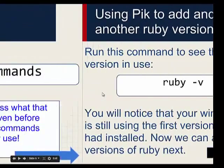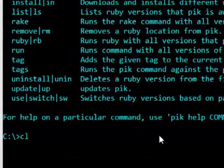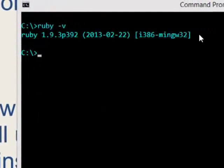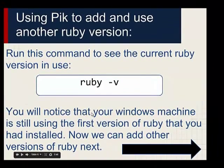Another feature is using pik to add and use another Ruby version. The main purpose of pik is to manage different versions of Ruby. Right now you can run `ruby -v` — that will give us the version of Ruby currently in use. Mine is 1.9.3 with some other information. You may realize that even though we've installed pik, nothing has changed yet.